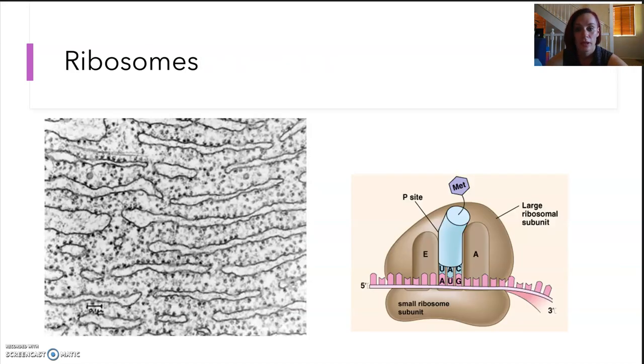The ribosomes are little protein workbenches. Essentially, ribosomes themselves make the proteins, but they are themselves proteins. It's protein section. They don't have a membrane, and we will look into how proteins are made later on in the course. They can be floating around free in the cytoplasm, or they can be attached to the endoplasmic reticulum.